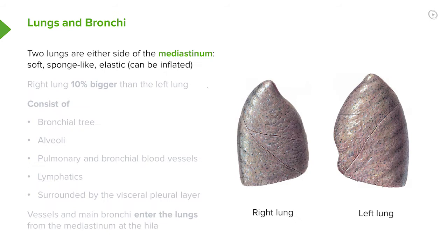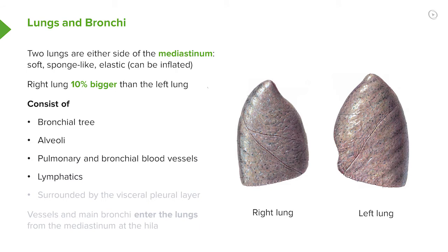After the trachea, the bronchi divide into the right and the left lung. The lungs themselves are very elastic, sponge-like material consisting of very large numbers of alveoli. The right lung is slightly larger than the left lung. The contents of the lung are the bronchial tree, the alveoli, the blood vessels, and the lymphatics, and importantly they're surrounded by a thin layer of visceral pleura.